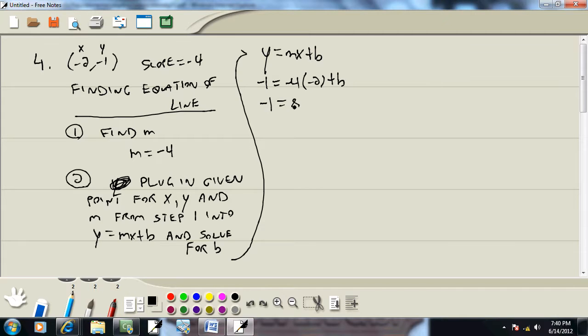Negative 4 times negative 2 is a positive 8. I'm going to take the 8 and move it over to the left side. So we got negative 1 minus 8. And we get b is equal to negative 9.